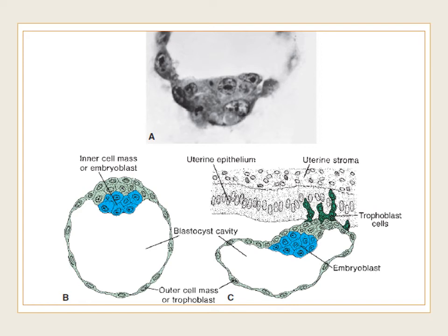Around 4.5 days after fertilization, the zona pellucida will disappear and the morula now becomes a blastula or blastocyst. The inner cell mass of the morula forms the embryoblast, shown in blue, which will become the future embryo. The outer cell mass is the trophoblast, which will later contribute to form portions of the placenta. By 6 days of development, cells from the trophoblast begin to invade the uterine mucosa in a process called implantation — so the blastocyst is the embryonic stage that implants itself in the uterine mucosa.